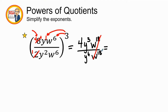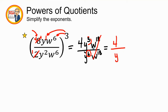When I simplify, 18 minus 18 is zero, so w to the zero power equals one, meaning those cancel out. Four is by itself on top, and since my largest exponent for y is six on the bottom, six minus three is three, so the variable stays on the bottom. My final answer is four over y to the third power.